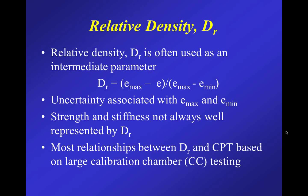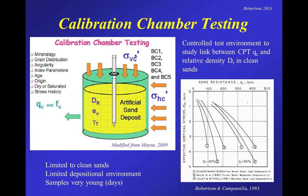Calibration chambers were large — often a meter or more in diameter — filled with sand at known relative density, void ratio, unit weight, and known stresses with various boundary conditions, either constant strain or constant stress. It was a controlled environment to study the link between CPT and relative density in clean sands. It was typically limited to relatively clean sands because high fines content is difficult to deposit uniformly. Samples were often only a few days old, so they're missing the effects of aging.